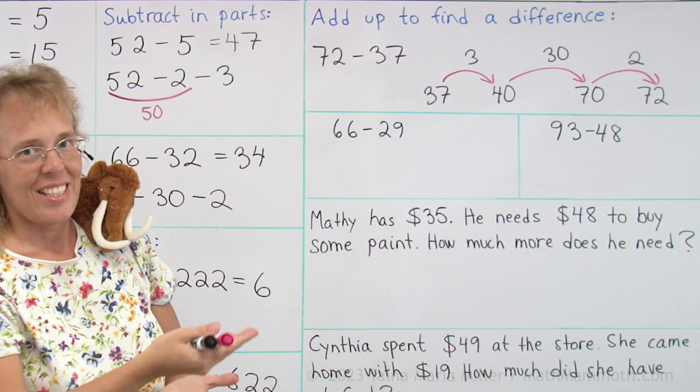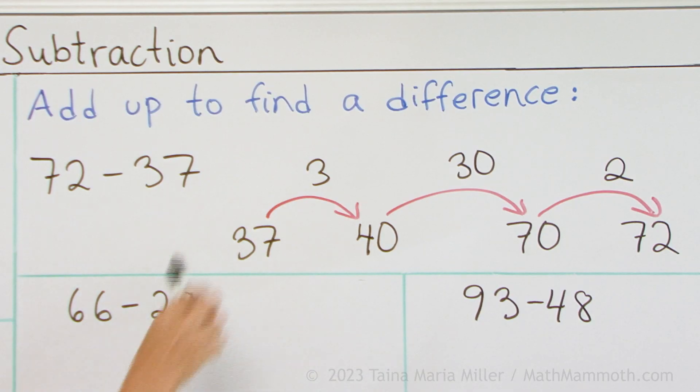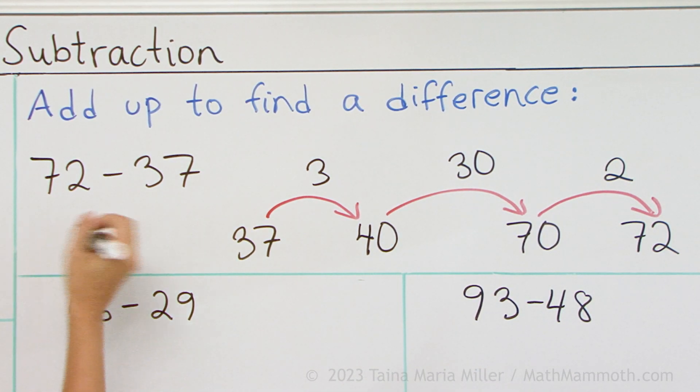How much did we add in total? 3 and 30 and 2. We added 35 in total. So that's the answer to this subtraction problem.